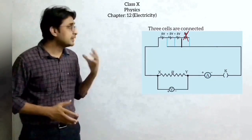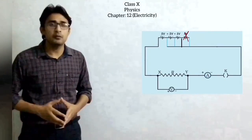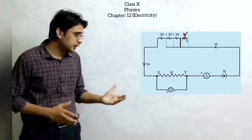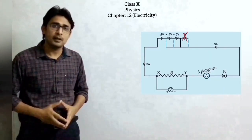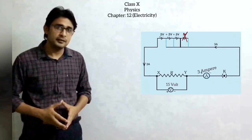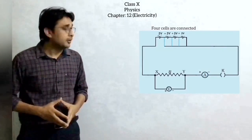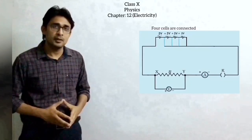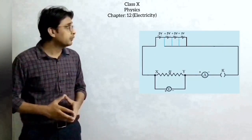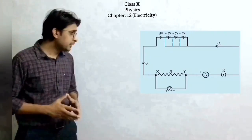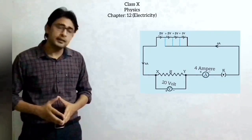Now we connect three cells, so the total potential difference is fifteen volts. We switch on the key and see the ammeter reading as three amperes and voltmeter reading as fifteen volts. In the last trial we connect all four cells together, so the total potential difference is twenty volts. The ammeter reading is four amperes and the voltmeter reading is twenty volts.